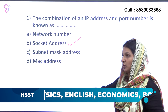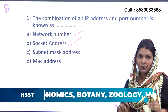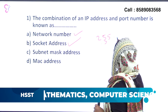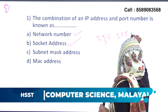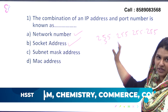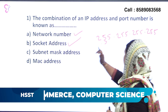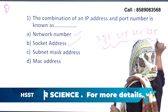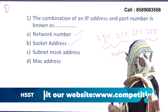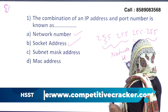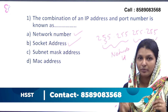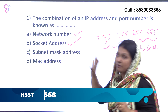Now let's look at the other options. For a network number, we denote an IP address — for example, 255.255.255.255. This IP address is divided into two parts: one is the Network ID and the other is the Host ID. This combination relates to the Subnet Mask Address.